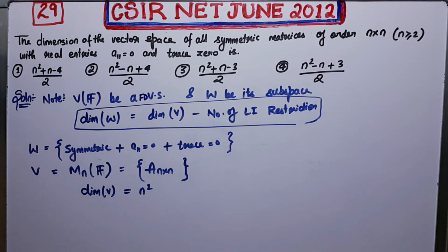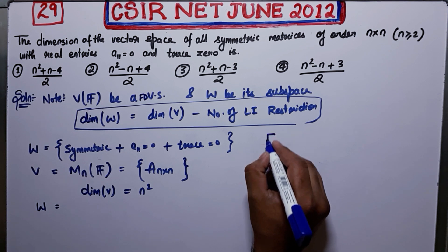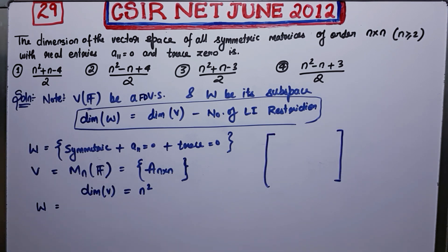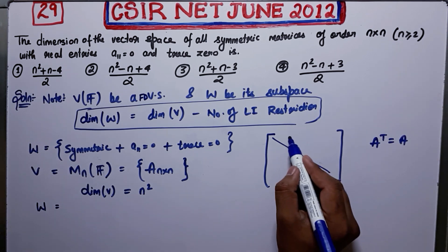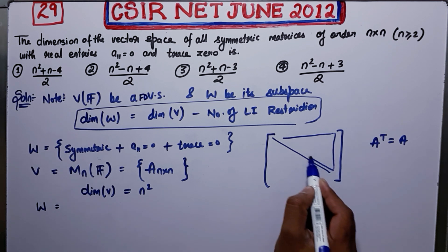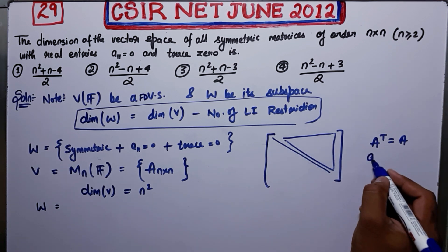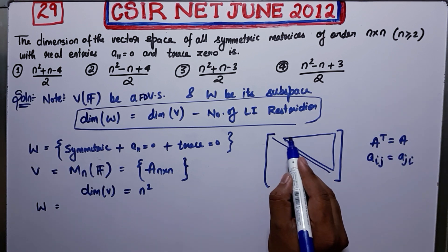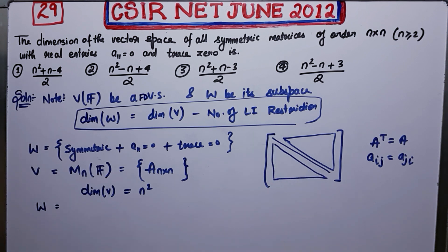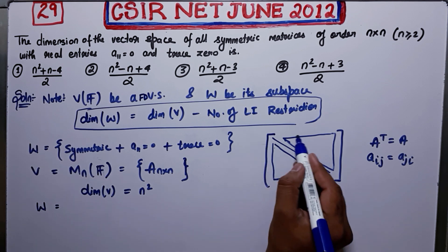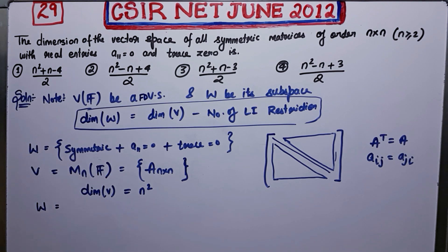Now let's analyze W. Symmetric matrices satisfy A^T = A, which means aᵢⱼ = aⱼᵢ. This means the entries in the upper triangle completely determine the entries in the lower triangle. Once you fix the upper triangular entries, the lower triangular entries are already fixed — they are not free.